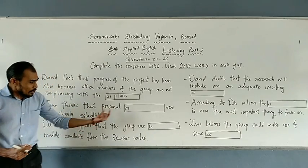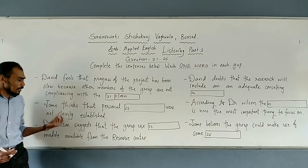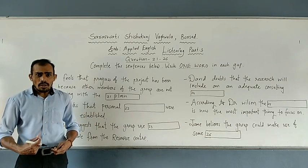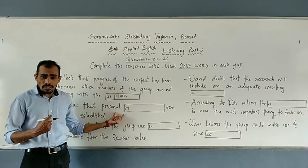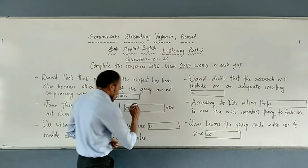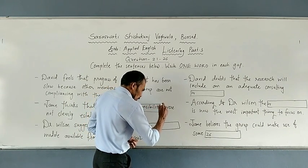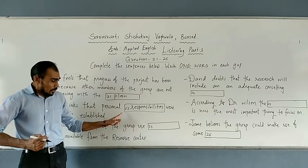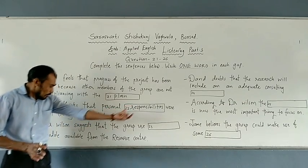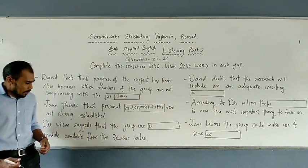Moving to question number 22: Jane thinks that personal tasks were not clearly established. When the task of making the assignment on local history was given, individual responsibilities were not specified. The answer is 'responsibilities'. Personal responsibilities were not clearly established, and hence they were facing problems.